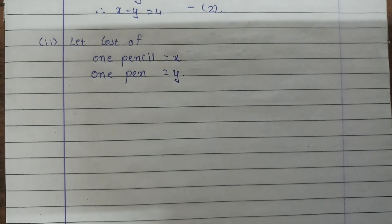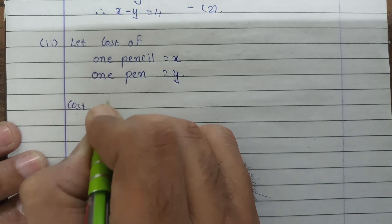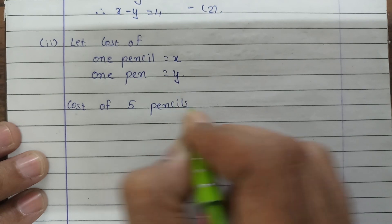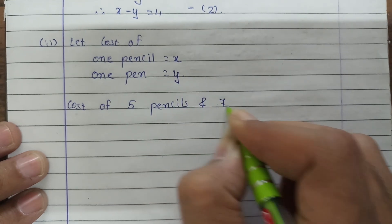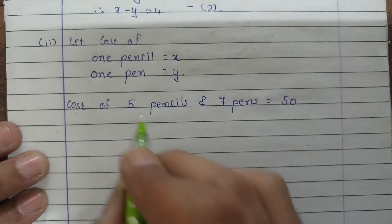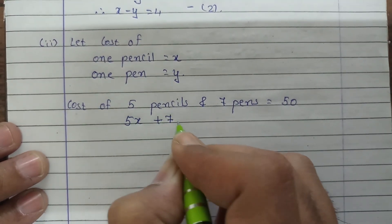Now what we are told is if 5 pencils and 7 pens cost 50 rupees, that means the cost of 5 pencils and 7 pens is equal to 50. Therefore, 5 times x plus 7 times y is equal to 50.